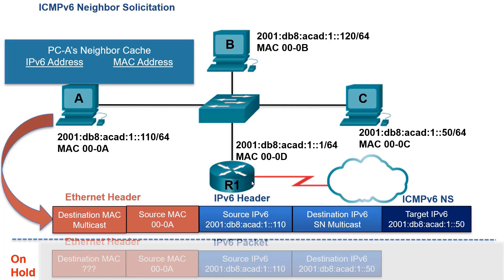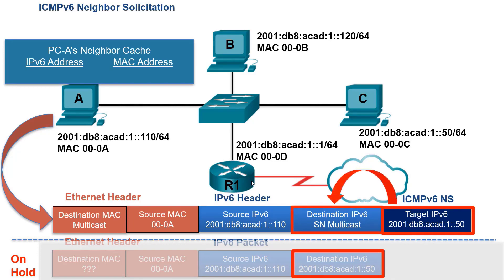The ICMPv6 Neighbor Solicitation header includes the target IPv6 address, which is the same destination IPv6 address in the packet that is on hold. The target IPv6 address is mapped to a special IPv6 Solicited Node multicast address, which is then mapped to a special Ethernet multicast MAC address. This mapping process contains a significant portion of the target IPv6 address, allowing the Ethernet NICs on each device to determine whether or not to accept and process the frame. This is an advantage of ICMPv6 Neighbor Discovery over ARP for IPv4, since ARP uses an Ethernet broadcast address and all devices on the local network must at least partially process an ARP request.